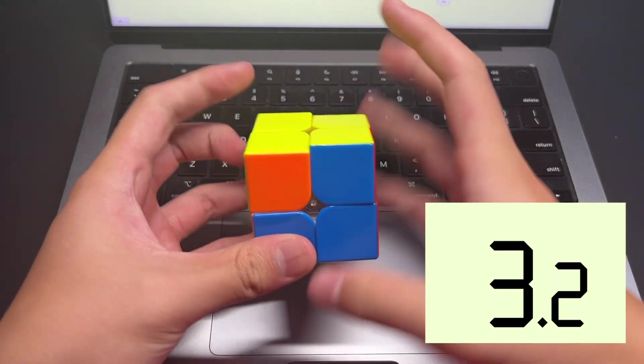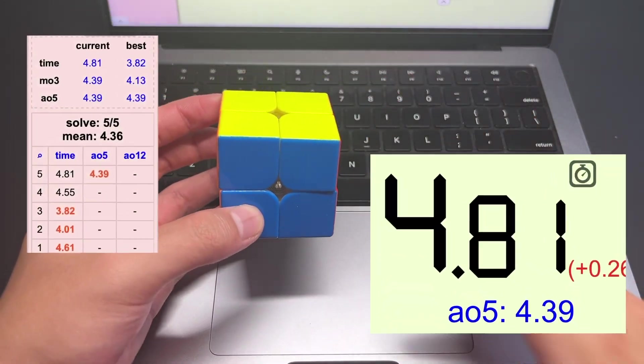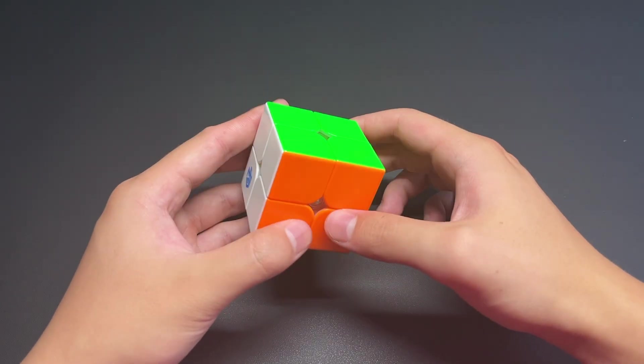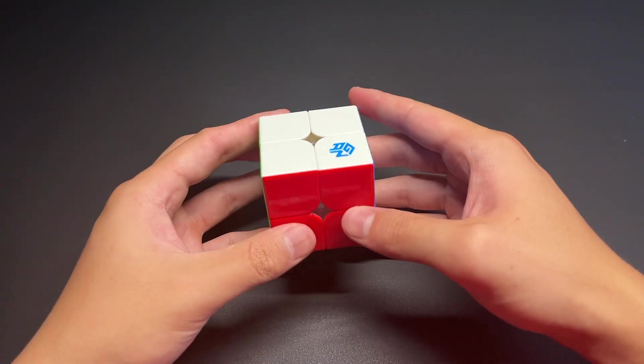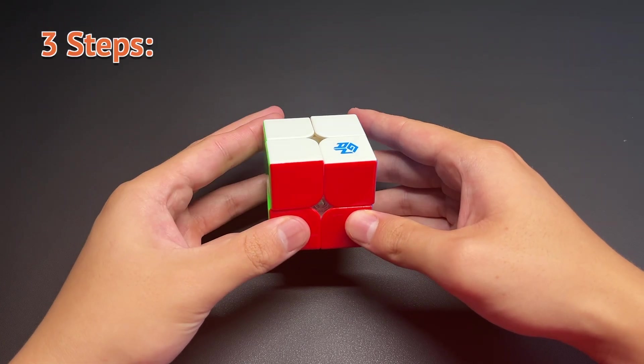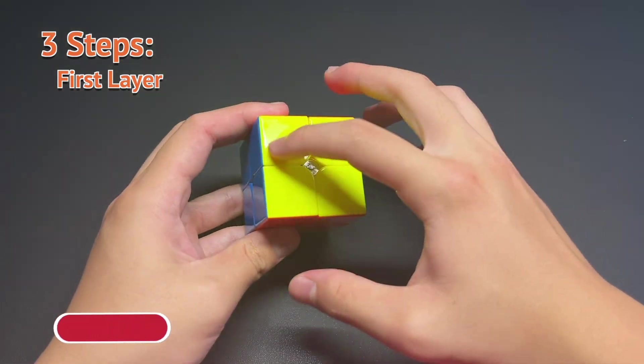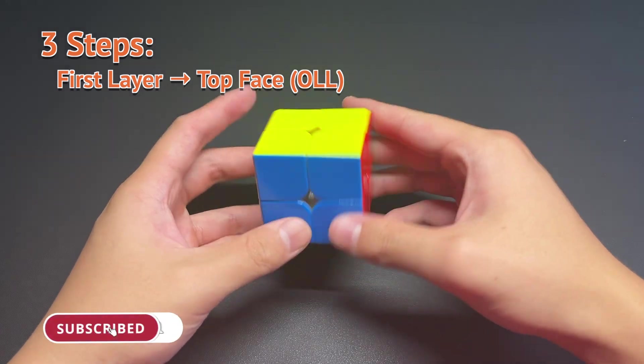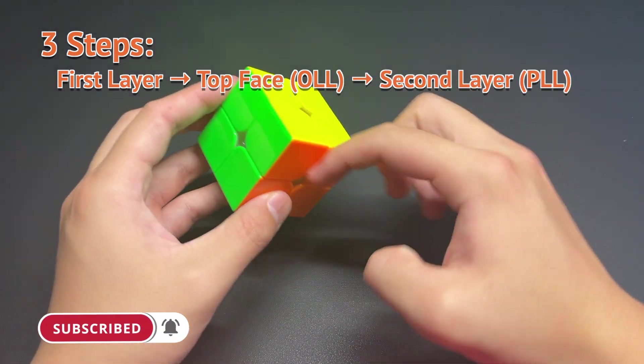So the beginner's method on a 2x2 is fairly simple. You have three steps. First, you solve the white layer, and then you solve the yellow face. And then lastly, you permutate all of the corners on the yellow face.